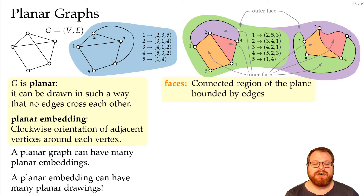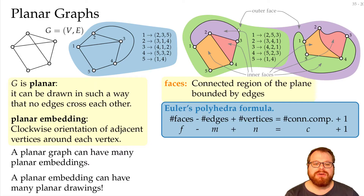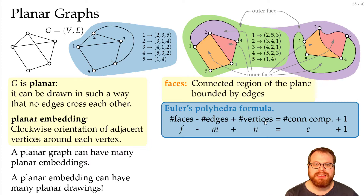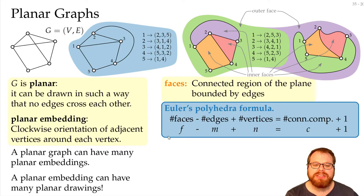We will now go to our first theorem, which is Euler's polyhedra formula. Euler's polyhedra formula for planar graphs tells us the following: the number of faces minus the number of edges plus the number of vertices equals the number of connected components plus one. Most of the time we have only one connected component, and then faces minus edges plus vertices equals two.